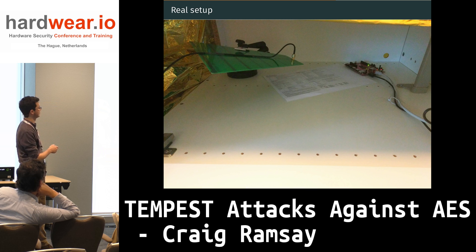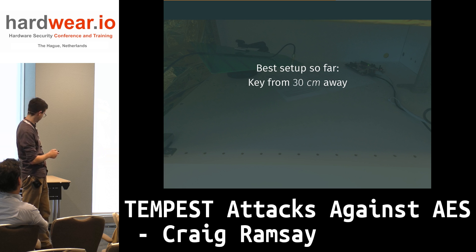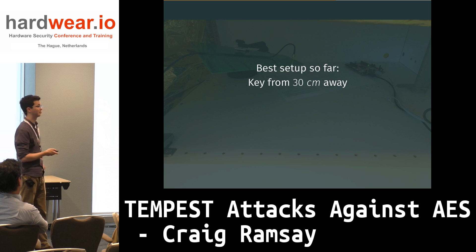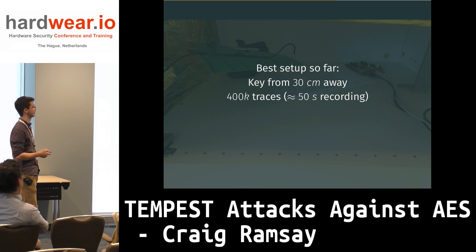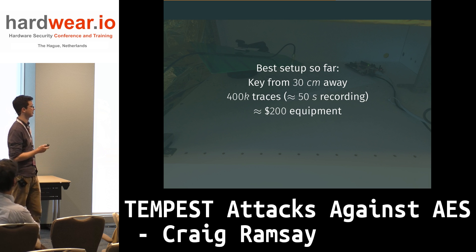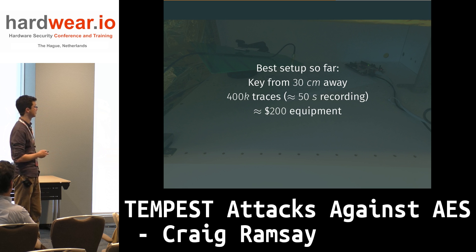We put that same setup inside the shielded box — about 30 centimeters from the tip of the antenna down to the chip. Our results: we managed to perform our attack and get the key from 30 centimeters, observing almost half a million blocks of encryption, which on our setup is only 50 seconds. The most impressive part is that this was with our really cheap radio dongle, some off-the-shelf amplifiers, and some emergency blankets — all came to pretty much $200, which is good for an intern budget.